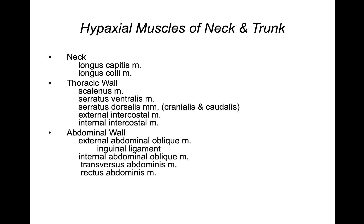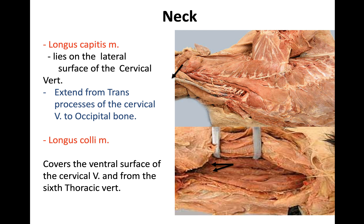The hypaxial muscle is usually divided by the region where they are found. For example, in the neck region we have two muscles: the longissimus capitis muscle and the longissimus colli. In the thoracic region we have the scalenius, serratus ventralis, serratus dorsalis, external intercostal, and internal intercostal muscle. In the abdominal region we have the external abdominal oblique, internal abdominal oblique, transverse abdominus, and rectus abdominus muscle.